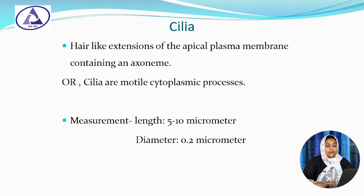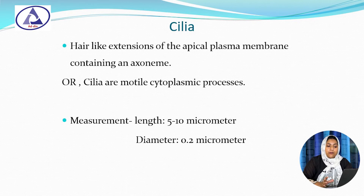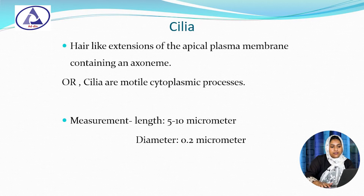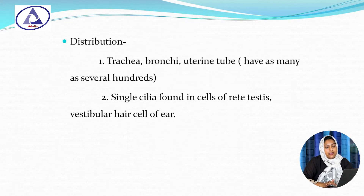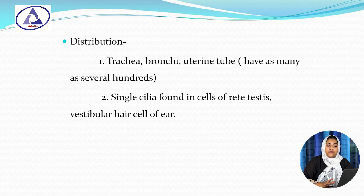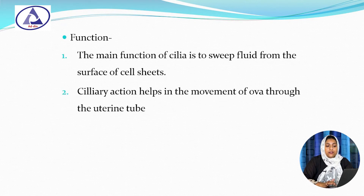Cilia are hair-like extensions of the apical plasma membrane containing an axoneme. Cilia are motile cytoplasmic processes. The length of cilia is about 5 to 10 micrometers and the diameter is about 0.2 micrometers. Cilia are present on the trachea, bronchi, and uterine tube. Within these organs, there are as many as several hundred cilia. Single cilia are found in cells of the rete testis and vestibular ear cells. The main function of cilia is to sweep fluid from the surface of cell sheets, and cilia action helps in the movement of ova through the uterine tube.